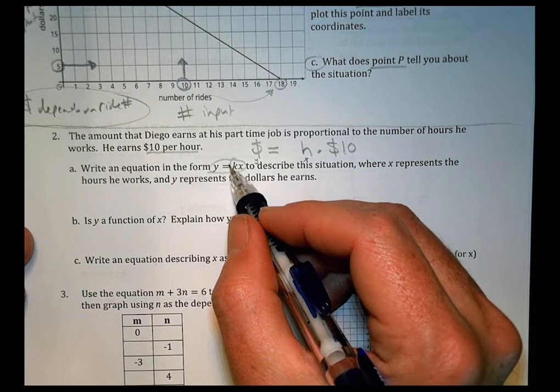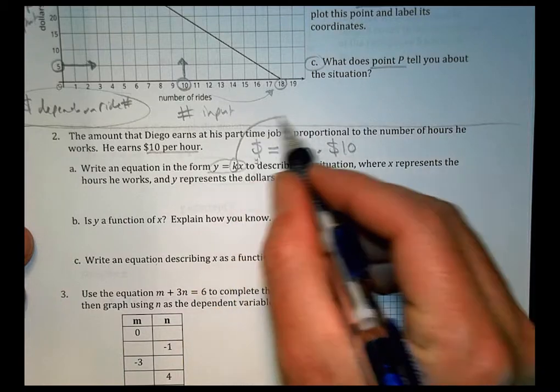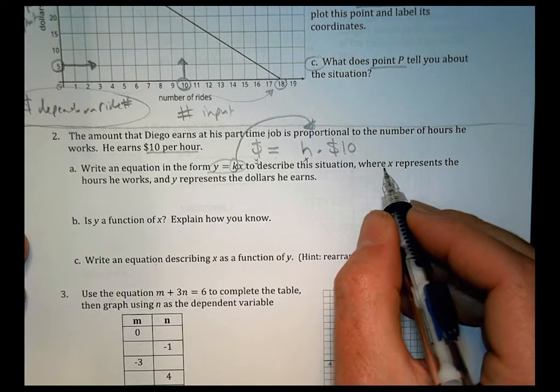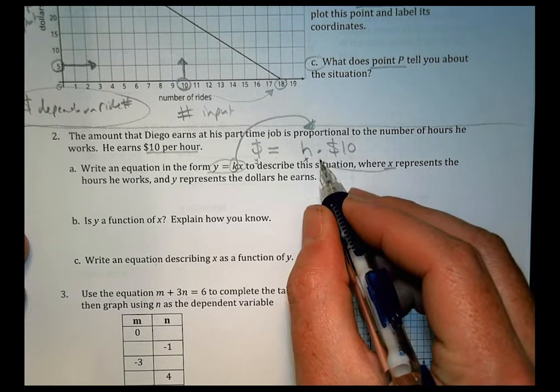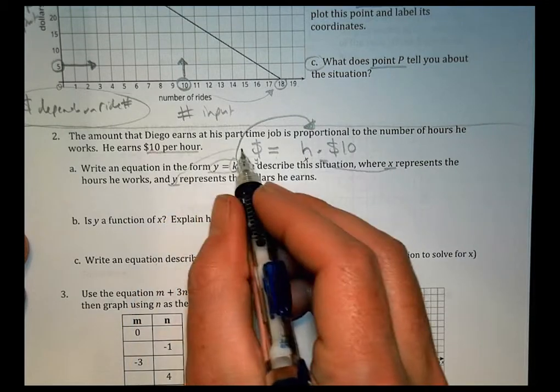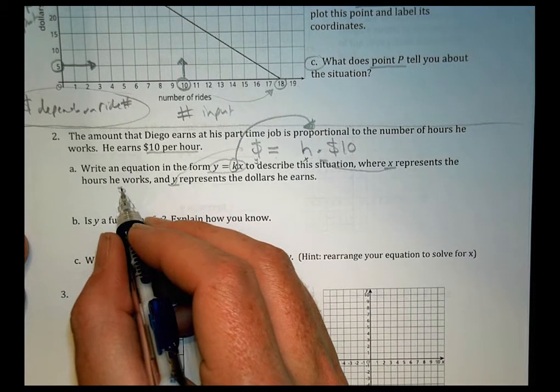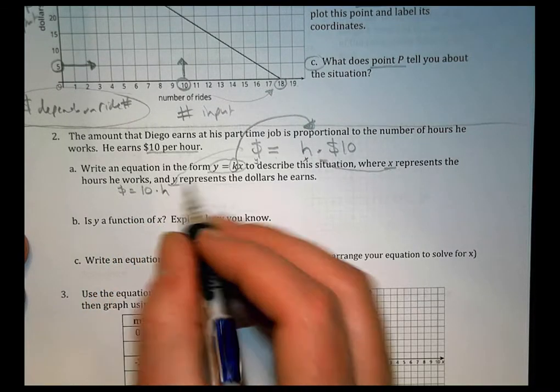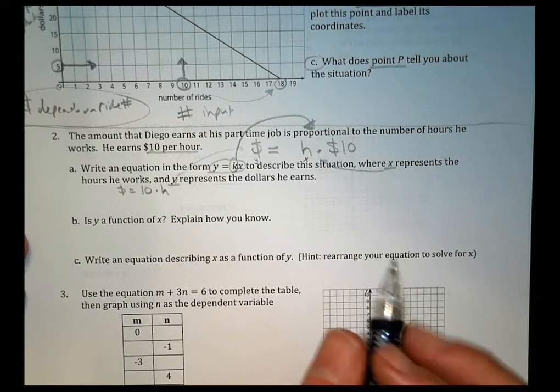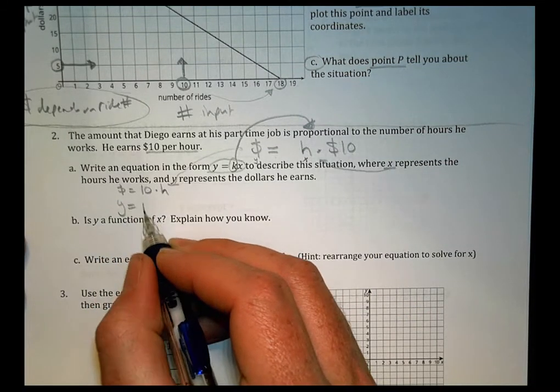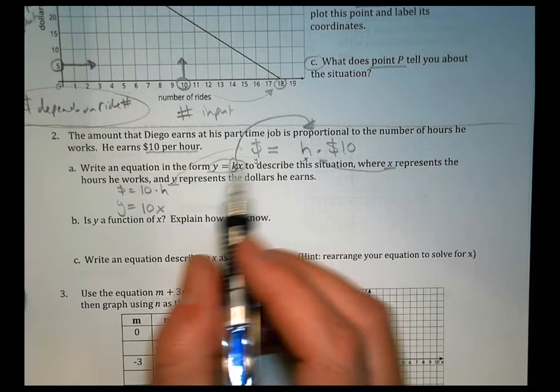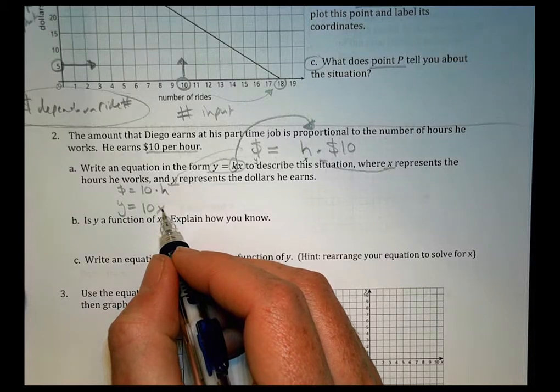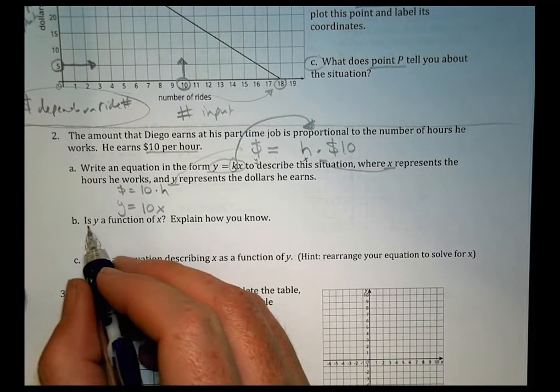So go ahead and solve that there and see what you can figure out. All right, number 2. It says, the amount that Diego earns at his part-time job is proportional to the number of hours he works. He earns $10 an hour. Meaning this, the amount of money that he makes depends on the number of hours that he works. And every hour that he works, he makes $10. So the amount of money he makes is going to depend upon how many hours he works. That's our independent variable, and that's our dependent.